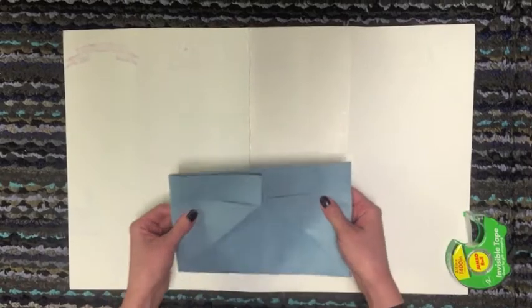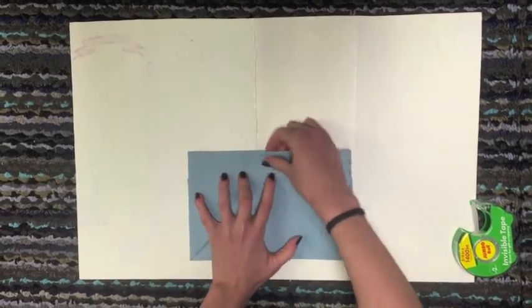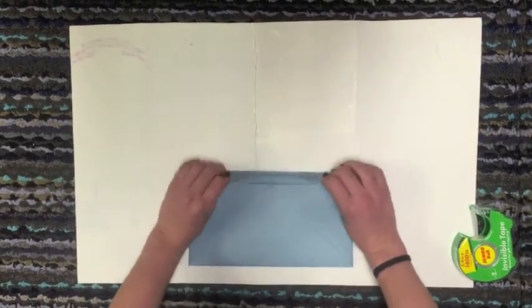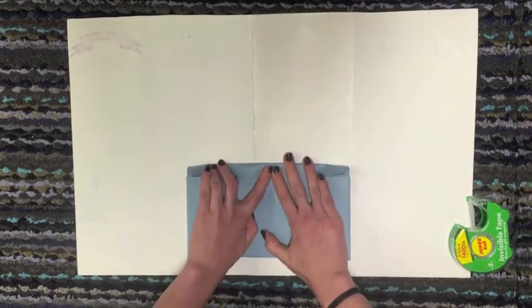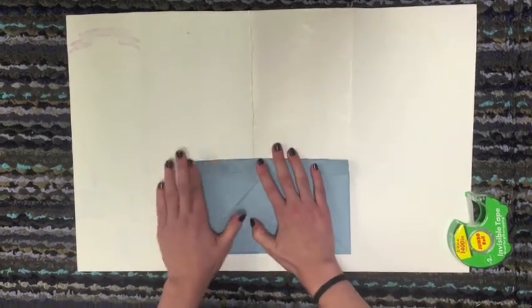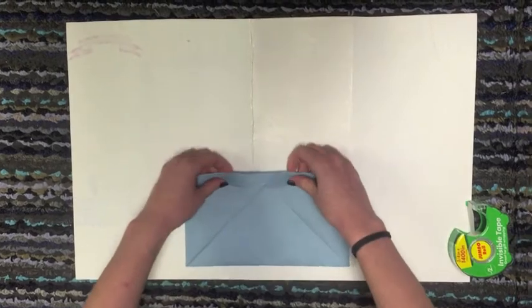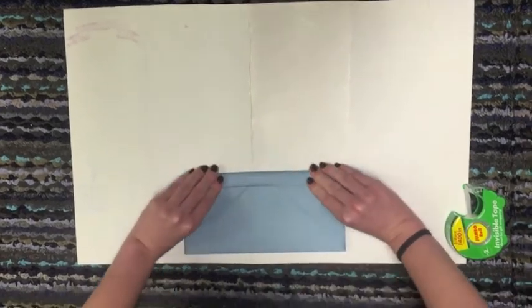You're going to turn it around, do the same thing with your other side. Take the top sharp edges, fold it into the bottom of your triangle. It's okay if your folds aren't perfect, the pocket will work. Then you take it one more time and fold it down.